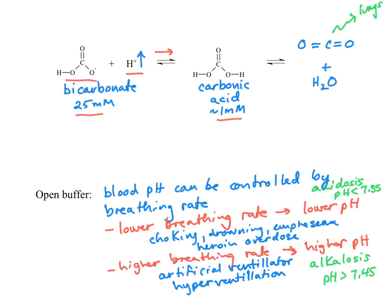So there's a very narrow window around 7.4. And not only is your blood pH controlled by buffering, as we've talked about, through the neutralization of bicarb and carbonic acid, but it can also be controlled by breathing rate through Le Chatelier's principle and the open buffer system that we talked about above.